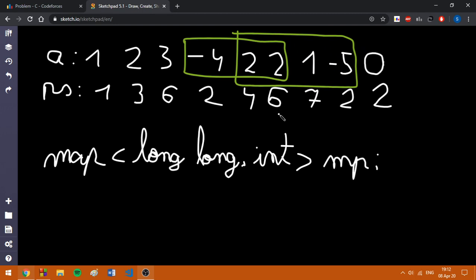If our prefix sum is equal to zero, we will also consider the position zero, which doesn't exist in array, but it helps us to choose the range one to i for some i such that its prefix sum is equal to zero.